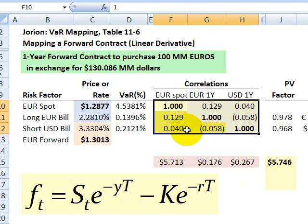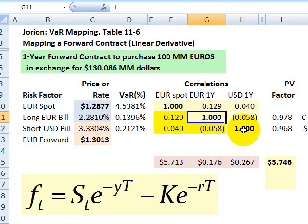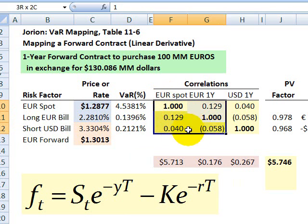We finally need the correlation matrix. This describes the correlations between the underlying risk factors. We have three underlying risk factors, so we have a three-by-three matrix. A correlation matrix will always have ones in the diagonal—an asset or factor's correlation with itself is always one. We do have a modest correlation in this cell, for example, between the foreign interest rate, the euro bill rate, and the spot currency exchange rate between the euro and the dollar.